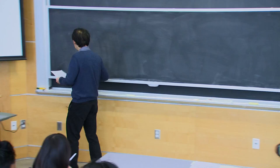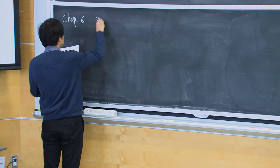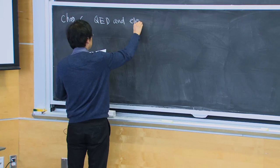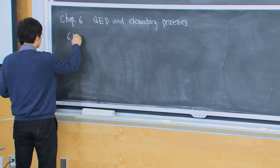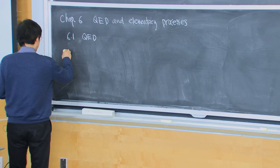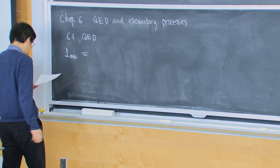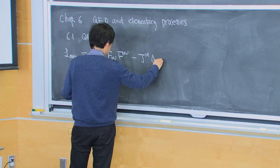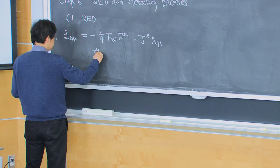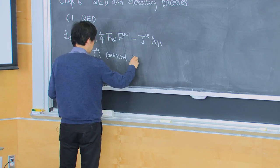So now let's talk about QED. We have talked about the Maxwell action, and here is the Lagrangian density: F_mu_nu minus J_mu A_mu. J_mu should be a conserved current because for the consistency of the Maxwell equation, J_mu has to be conserved.